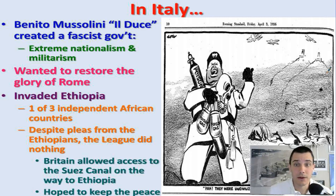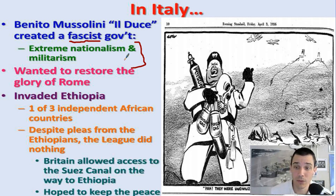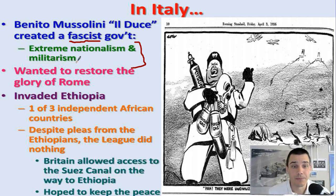In Italy, we have Benito Mussolini, who creates what's known as a fascist government. Fascism is extreme nationalism and extreme militarism — it's a combination of believing our people, our race, our country is superior, and being willing to go out and prove that using military domination. He wanted to restore the glory of the old Roman Empire. He's invading countries just like Hitler is — Ethiopia gets invaded by Italy.